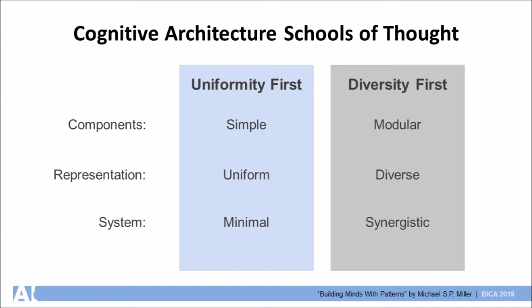Diversity First architectures favor modularity, synergy, and coherence. The SOAR architecture is an example of Uniformity First design. The ACT-R architecture is an example of Diversity First design. This division exists today. It pervades the approaches people take to cognitive architectures.